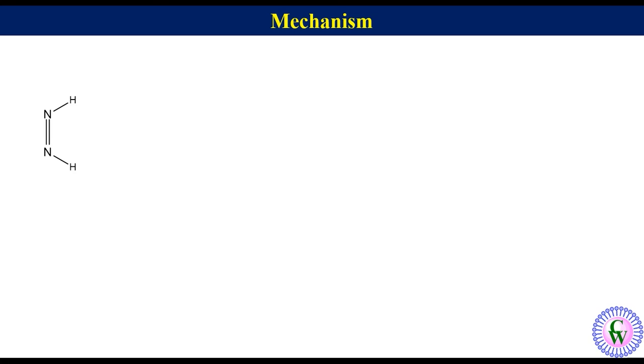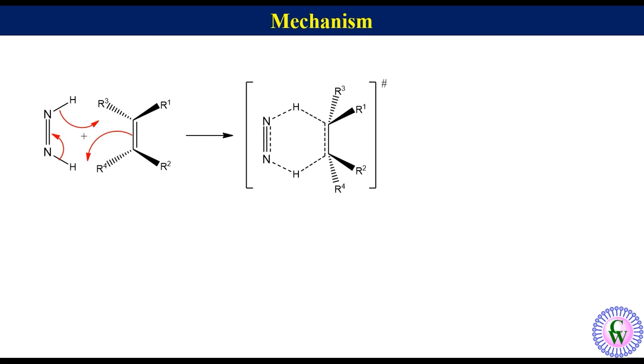This is the cis form of diimide and let's have an alkene as a substrate for the reduction. The concerted transfer of hydrogen will give a six-membered cyclic transition state which will collapse into nitrogen gas and alkane. Here we can see that the addition of two hydrogen atoms to alkene is in syn fashion.